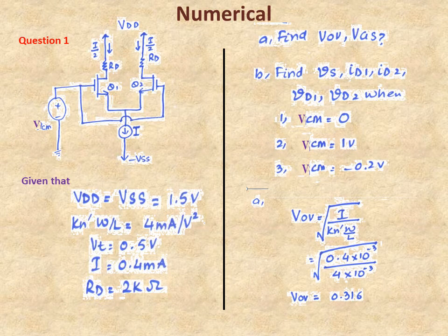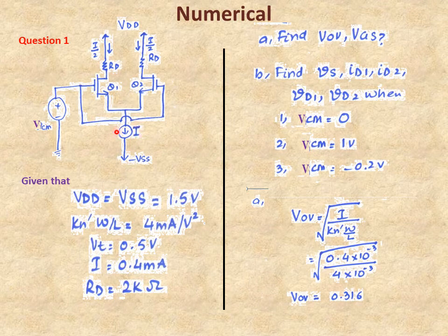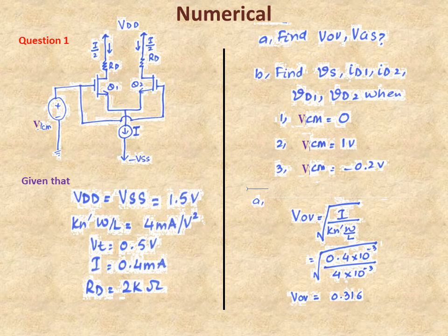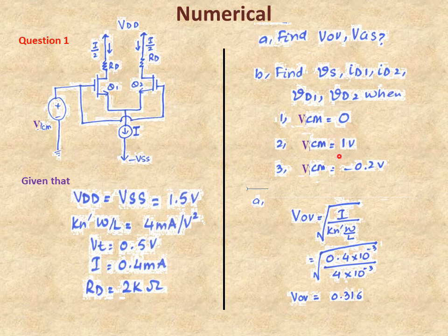We will do a numerical where the gates of both transistors are joined together and connected to a single DC supply VCM. VDD and VSS are 1.5 and minus 1.5. KNW/L, threshold voltage, current source I, and RD are given. In part A, find overdrive voltage VGS minus VT and VGS. In part B, find VS, ID1, ID2, VD1, VD2 for VCM = 0, VCM = 1, and VCM = minus 0.2. I will solve only for VCM = 0.